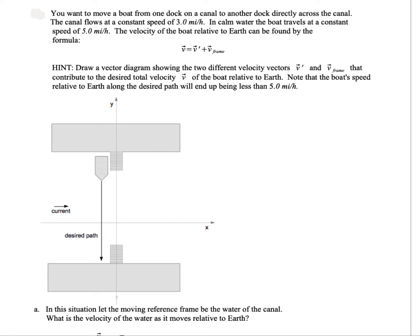The velocity of the boat can be found by the Galilean relativity formula: v equals v prime plus v frame. We want to draw a vector diagram showing the two velocity vectors v prime and v frame that contribute to the desired total velocity of the boat relative to Earth.